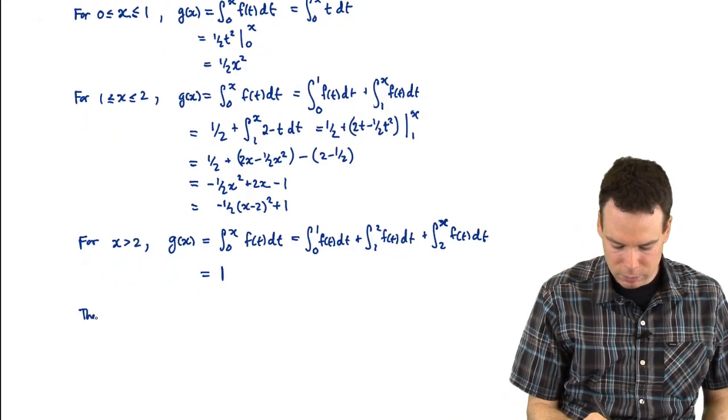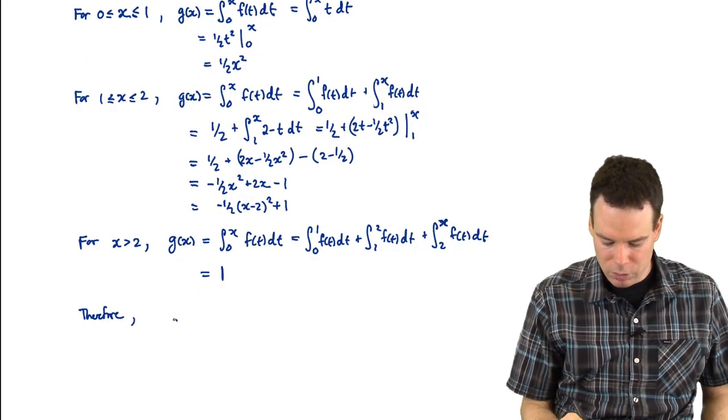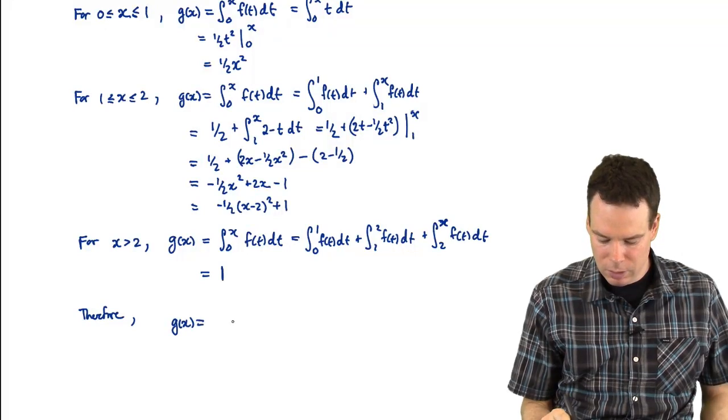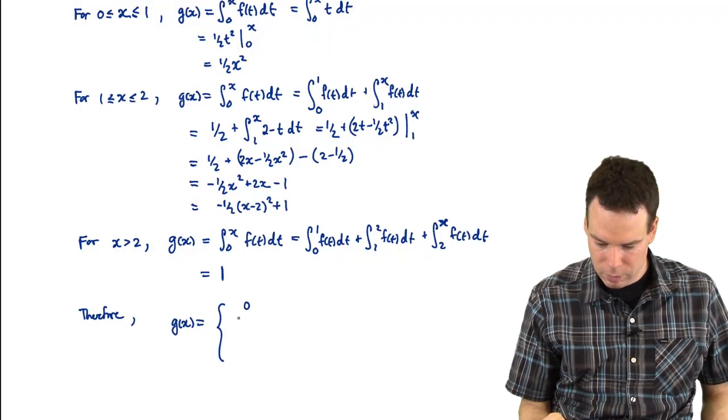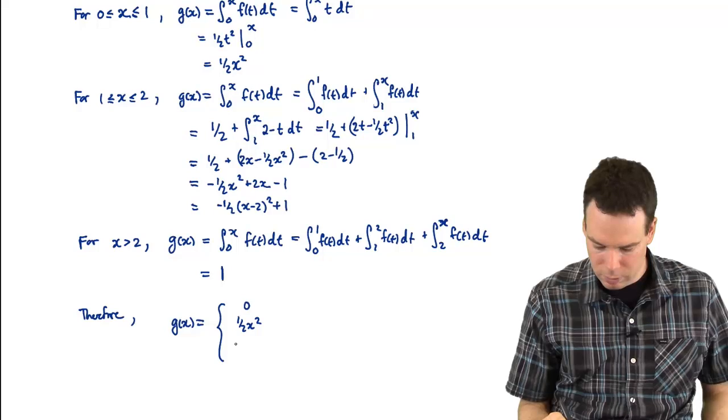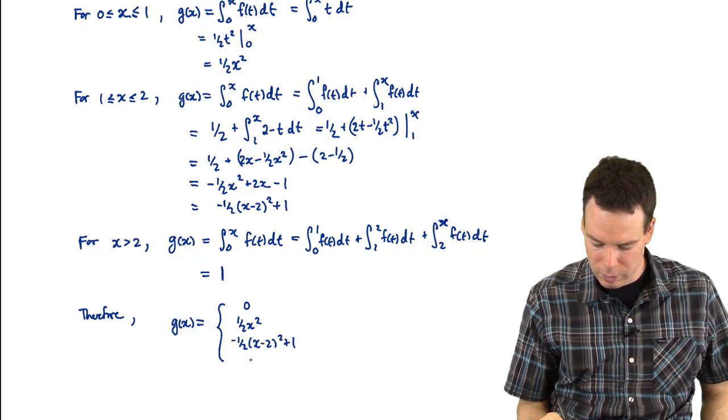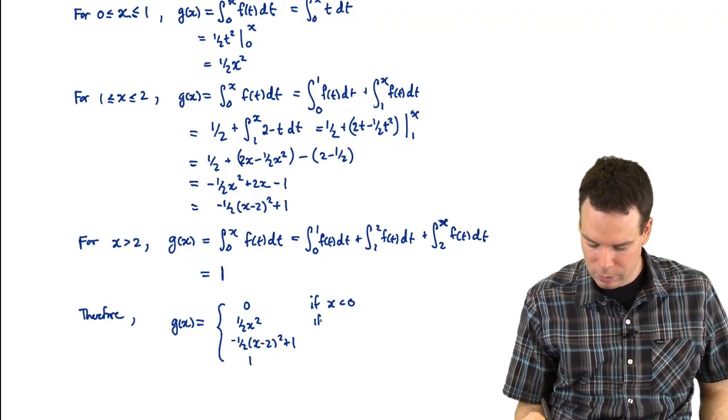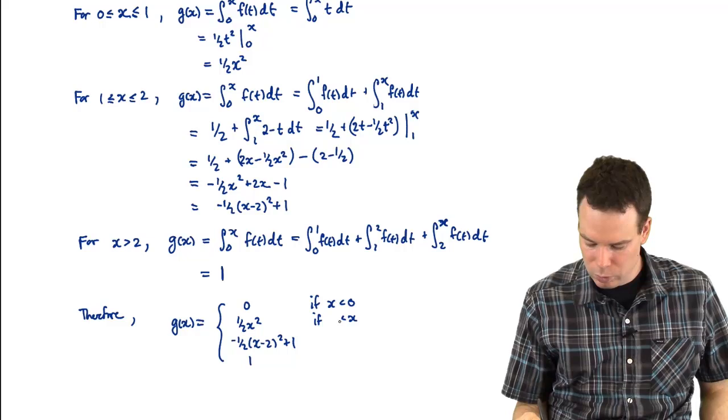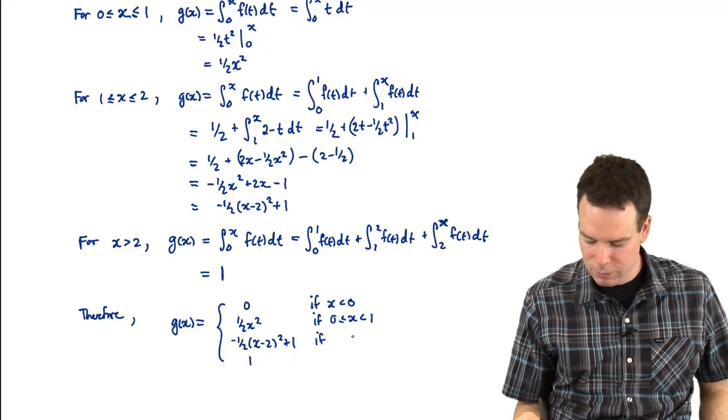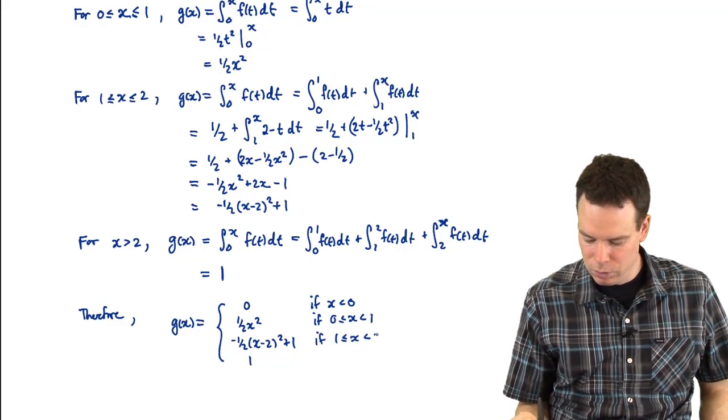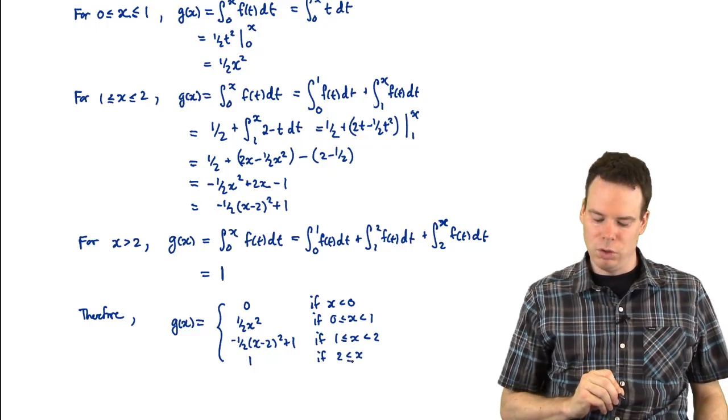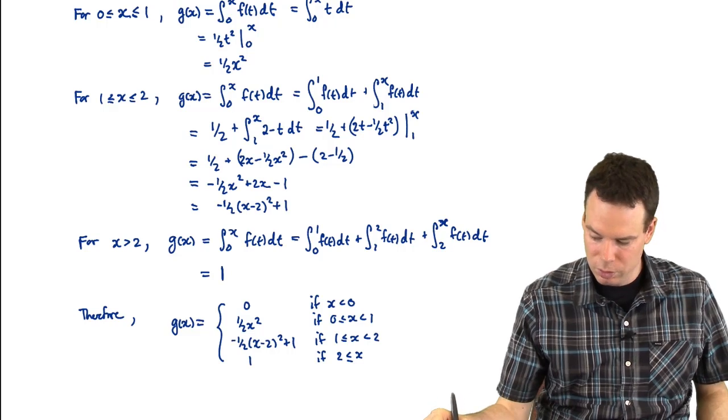And so therefore, we have that g of x is equal to 0 if x is less than 0, 1/2 x squared if x is between 0 and 1, negative 1/2(x minus 2) squared plus 1 if x is between 1 and 2, and 1 if x is bigger than 2. So there's our function g.